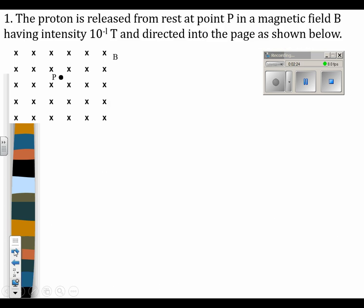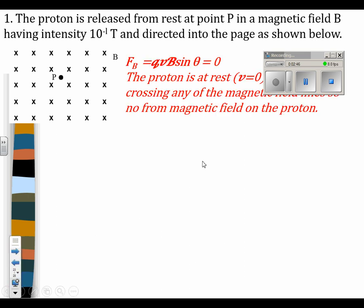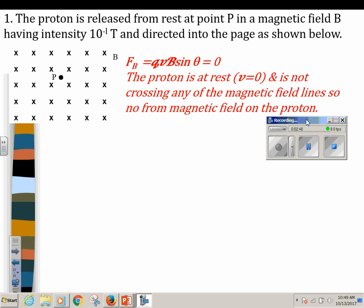So two examples. I have a proton that's released from rest at point P in a magnetic field having an intensity of 10 to the first Teslas, and it's directed into the page as shown. Well, the important thing to remember, if I'm asking you to solve this problem, is that it was released from rest. So if it's at rest, then the velocity is zero. And if the velocity is zero, then there is no cross product. And if there's no cross product, then there's no magnetic force. So there wouldn't be any force on this one.